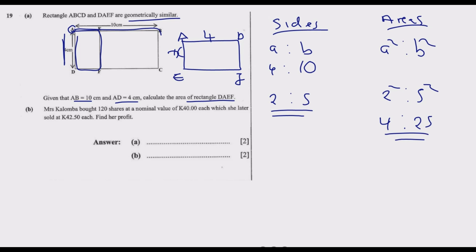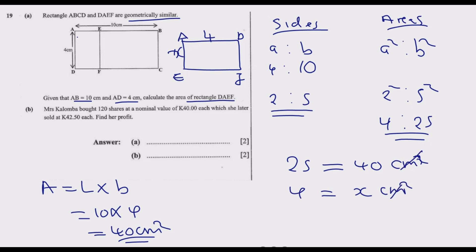We can find the area of the larger shape because we've been given all the sides. Area is given by length multiplied by breadth: 10 multiplied by 4 equals 40 centimeters squared. Now we can use this fact: if 25 equals 40 centimeters squared, then 4 would equal x centimeters squared. So 25x equals 4 times 40.